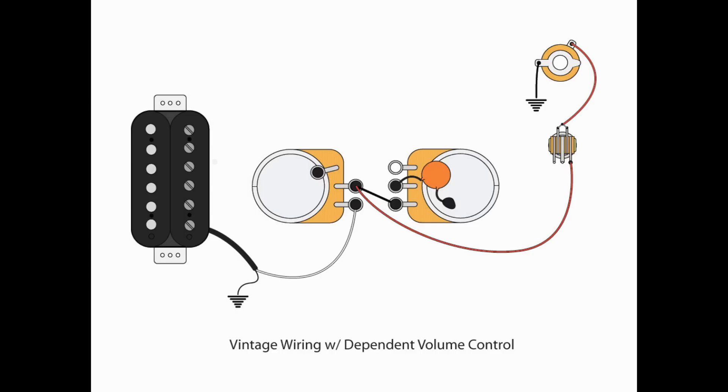Now, if I wanted a vintage wiring scheme with dependent volume control, it's going to look very similar. I've got my pickup output going to L1. I have a jumper from L2 to L3 of my tone control, and my output to the switch is still coming from L2 of the volume. So the difference is my jumper, similar to what we've always done with our vintage and modern wiring. That's really the difference between them. But this, because the output to the jack is coming off of lug L2, I'm getting that dependent volume control.